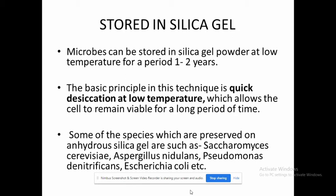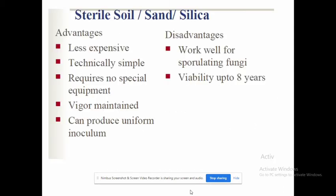The silica gel method is used to preserve fungi such as Saccharomyces cerevisiae and Aspergillus. Sterile soil, sand, and silica methods have similar advantages — they are less expensive, technically simple, require no equipment, and can produce uniform inoculum. The disadvantage is that viability is lower and they only work for sporulating fungi, not all fungi.